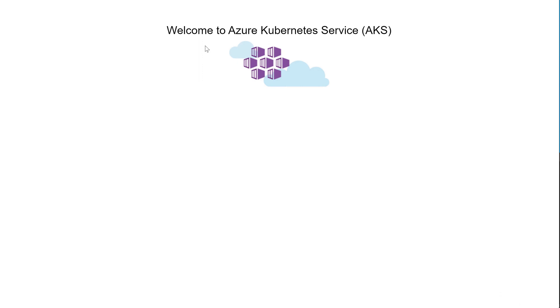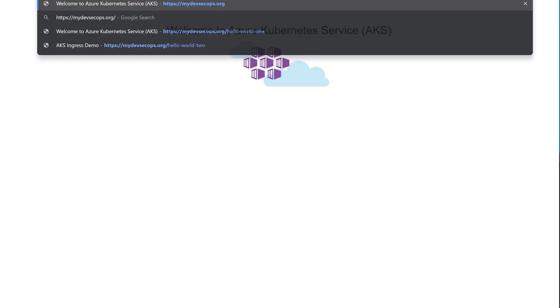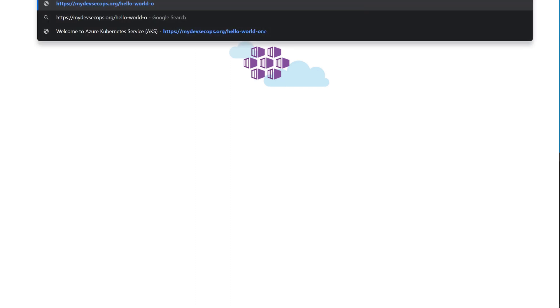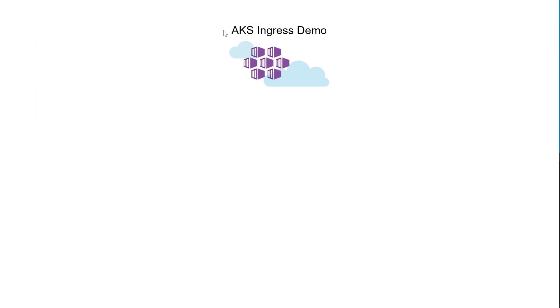And our application one is showing its webpage. Now if we add the host path hello-world-one it goes to application one again, as we defined in the ingress routing. It's the same page. If we change it to two, it goes to application two — and the webpage has changed. The ingress controller has made the changes in the load balancer and all traffic through the public IP is routing to application one and application two based on the host path.